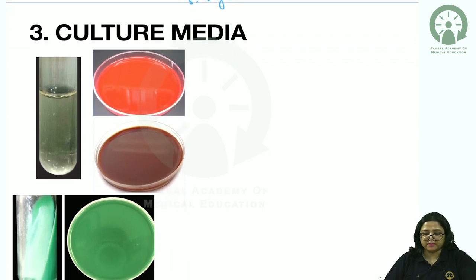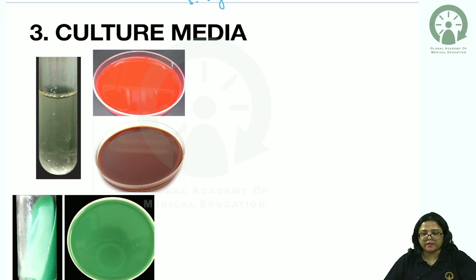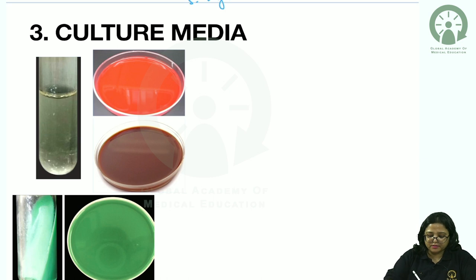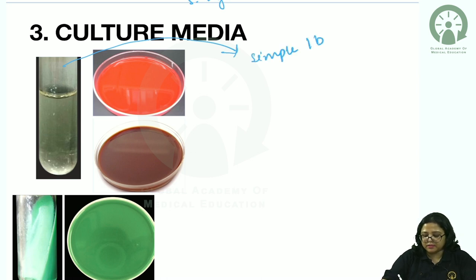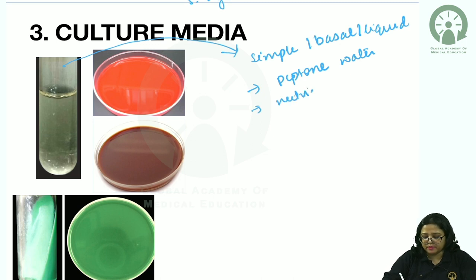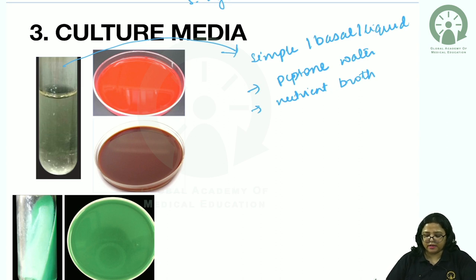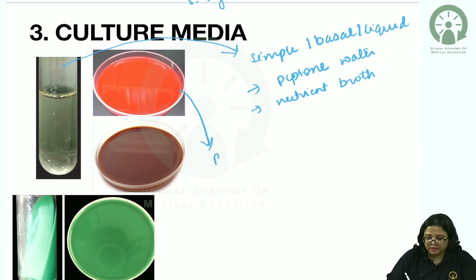In culture media, questions may directly ask about identification of media. The first classification is simple basal media — liquid media such as peptone water or nutrient broth containing just peptone, NaCl, and water without agar. Another classification is complex media, which includes enriched, selective, and differential media. Blood agar is an example, made from sheep blood or human blood.